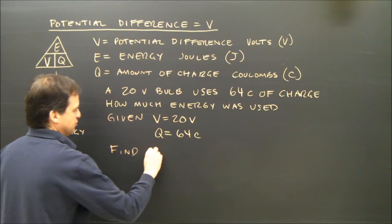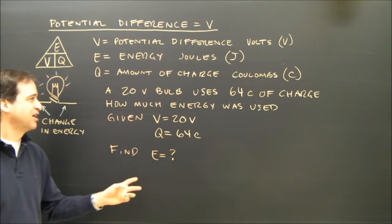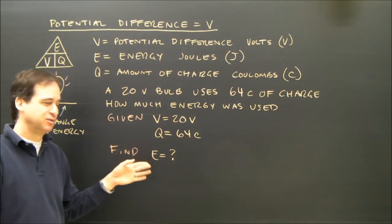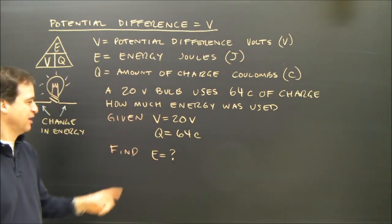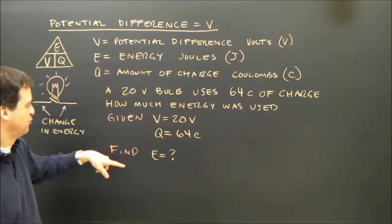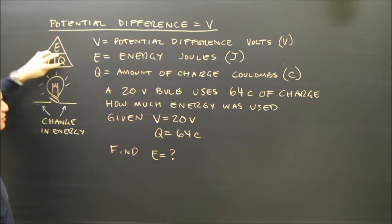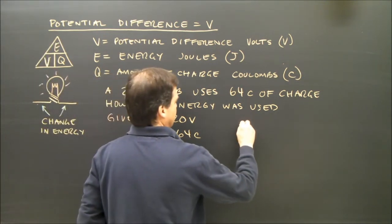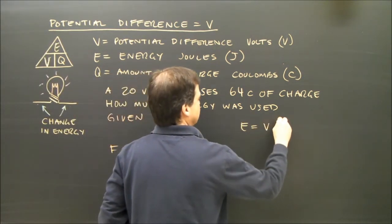How much energy was used? We can also say this is not just how much energy was used, but how much work was done. So I'm going to look for E. E is equal to V times Q.